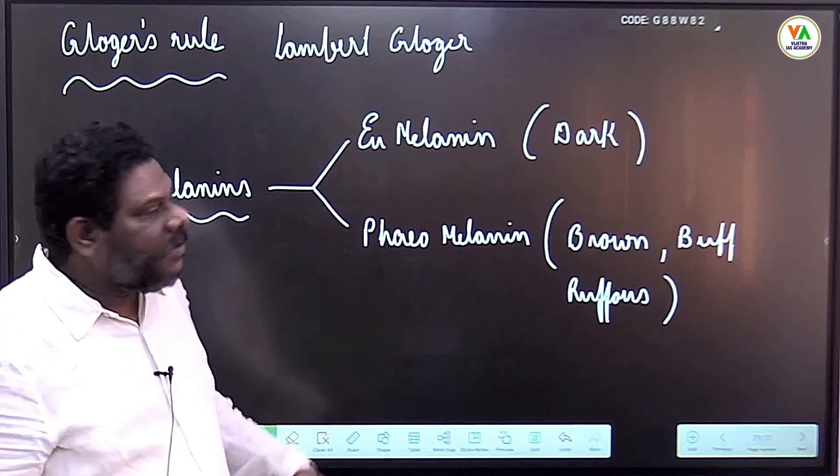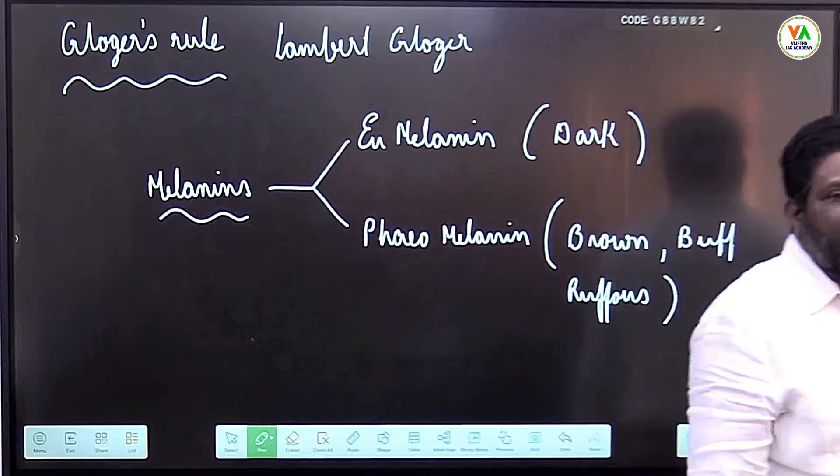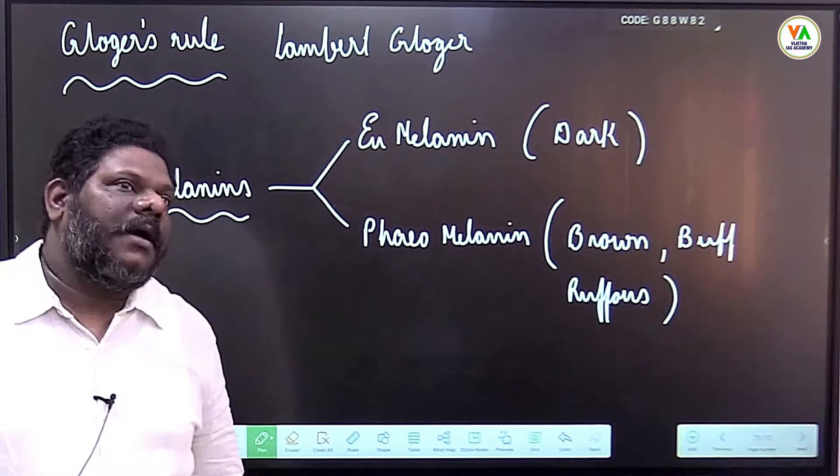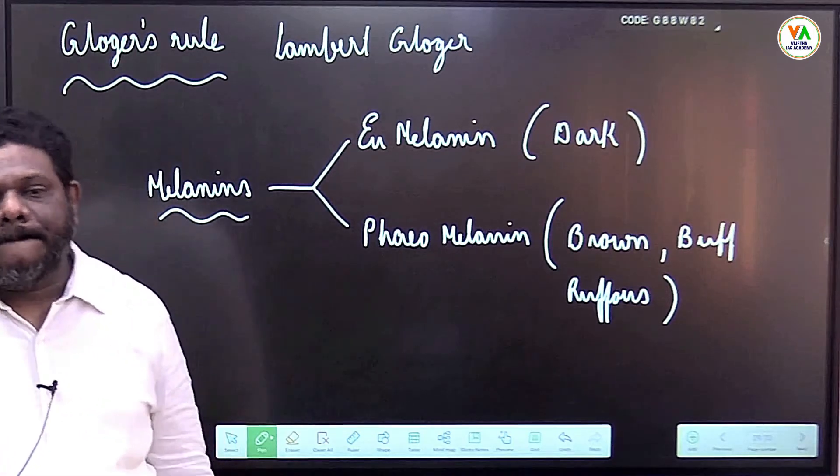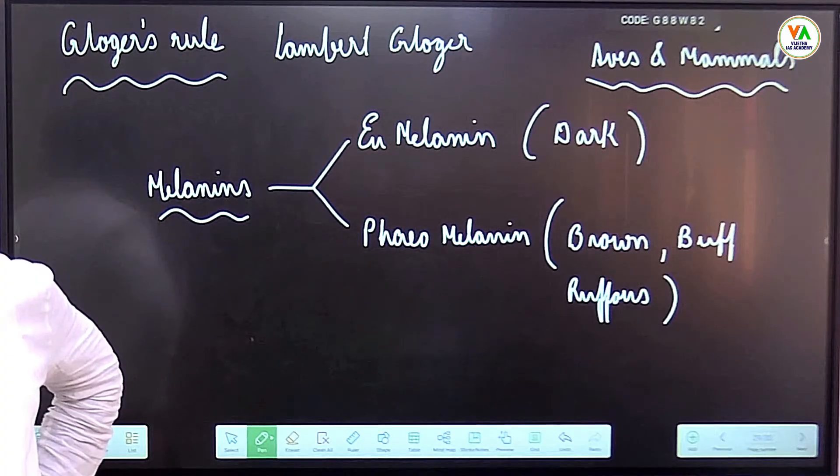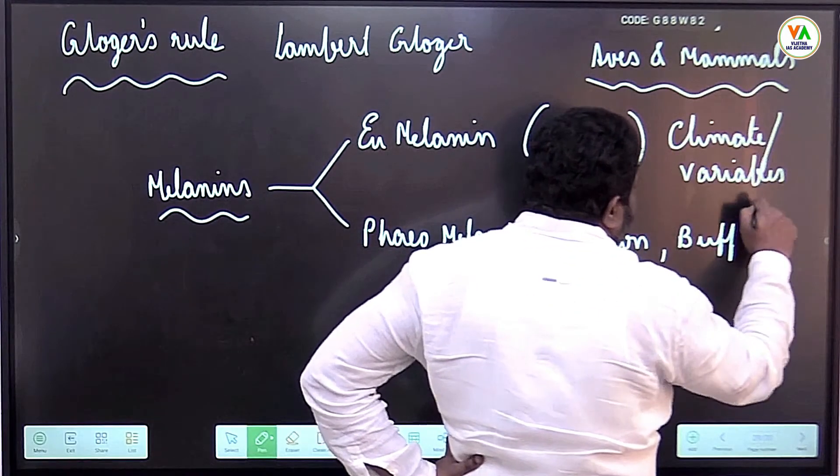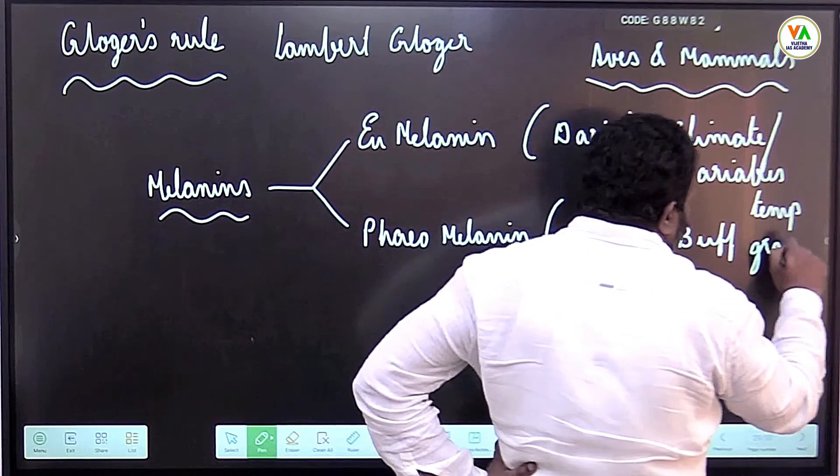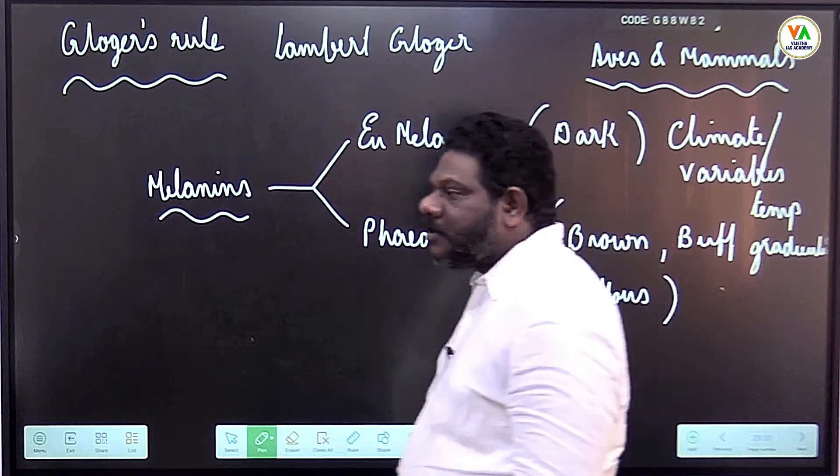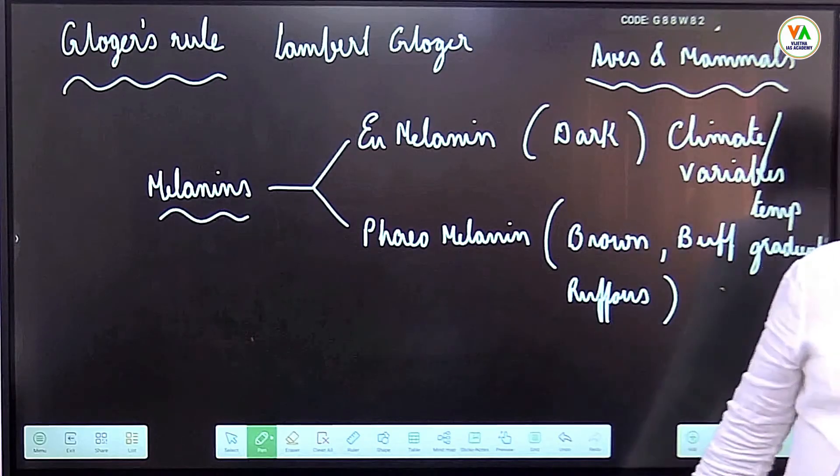Glogger's rule was given by Lambert Glogger, who explains skin coloration of various endothermic animals like aves and mammals in response to climate variables or temperature gradients. According to this rule, melanin which is secreted by melanocytes is responsible for skin coloration.